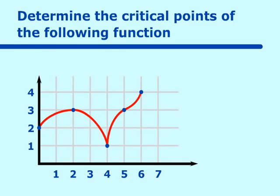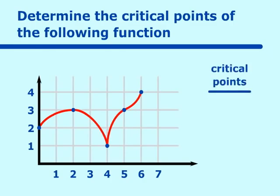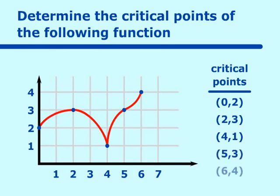So the critical points in a list are (0, 2), (2, 3), (4, 1), (5, 3), and (6, 4), where the function has a derivative that is equal to zero or not defined at all.